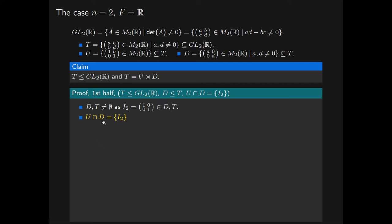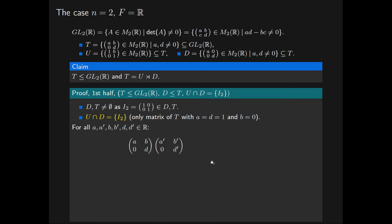The intersection of U and D is simply equal to the set consisting of the 2 by 2 identity matrix. This is because this is the only matrix of T where the entries A and D are both 1 and B equals 0 — a requirement for a matrix to be in U and also in D. Now we will make note of an important identity: for any six real numbers, the product of the following not necessarily invertible upper triangular matrices gives the following upper triangular matrix, and this identity will be denoted by star.